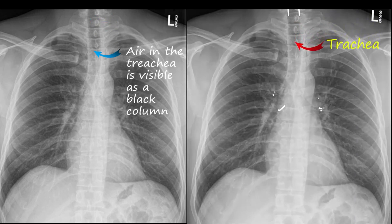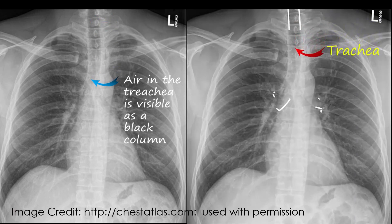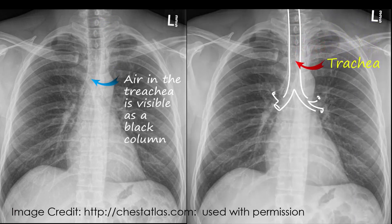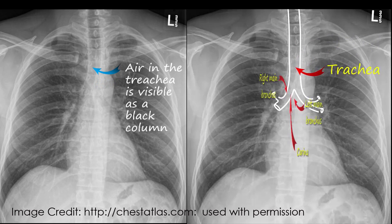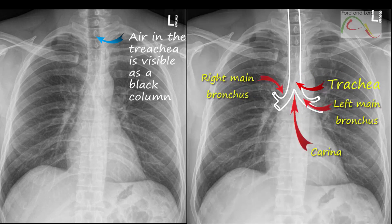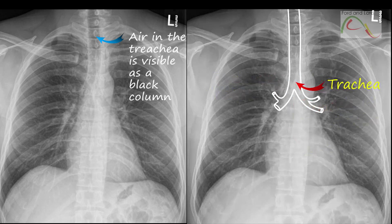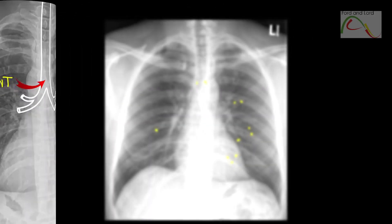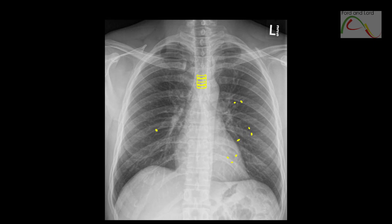The trachea, or windpipe, is part of the lower respiratory tract. It allows air to flow in and out of the lungs, which is why it is considered part of the air-conducting system, or airways. The airways are made up of a series of branching tubes which consist of the trachea, bronchi, bronchioles, and alveolar ducts.